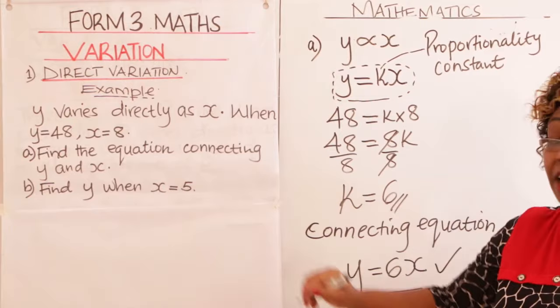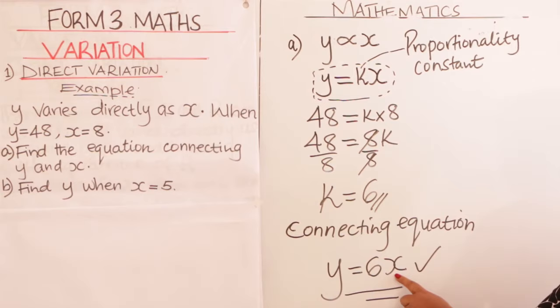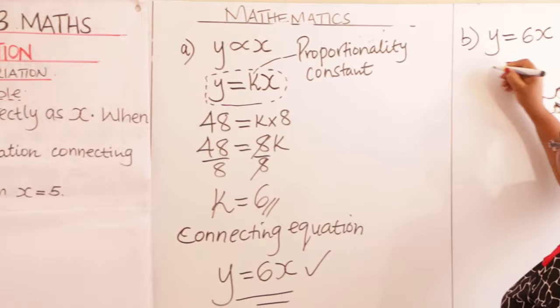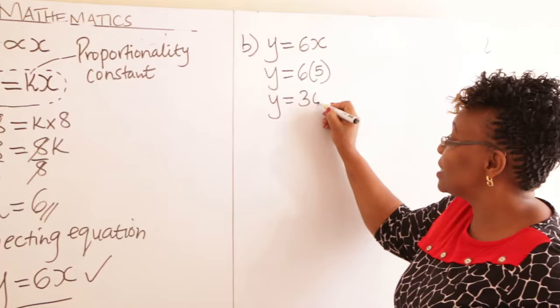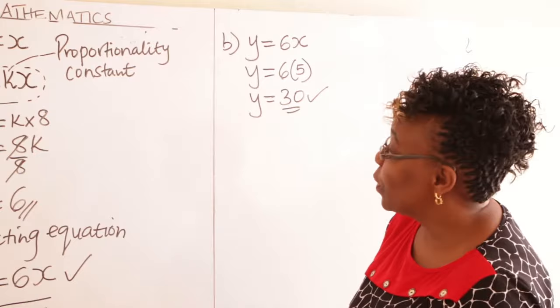From there, learner, part B: you are asked to find Y when X is 5. Using the connecting equation, substitute X with 5. Therefore, Y equals 6 times 5, which gives us 30. And that is your answer.